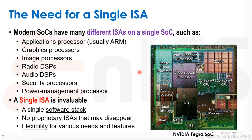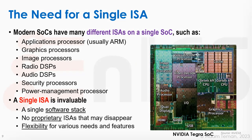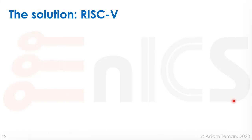A single ISA provides us with a single software stack, no proprietary ISAs that may disappear, and flexibility for various needs and features. Guess what? There's a solution to all this, and it's known as RISC-V.